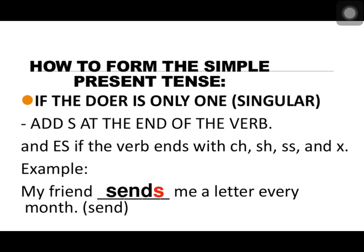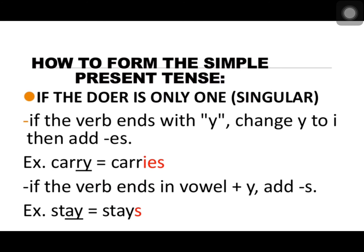If the doer is singular or third person, as I told you, we add S at the end of the verb, and ES if the verb ends with CH, SH, SS, or X. For example: my friend sends me a letter every month — here, my friend is a singular subject, so we use S or ES at the end of the verb. If the doer is singular and the verb ends with Y, then Y changes to I and we add ES — for example, carry becomes carries. If the verb ends in a vowel plus Y, such as in stray, A is a vowel and the verb ends with Y, so we use only S.